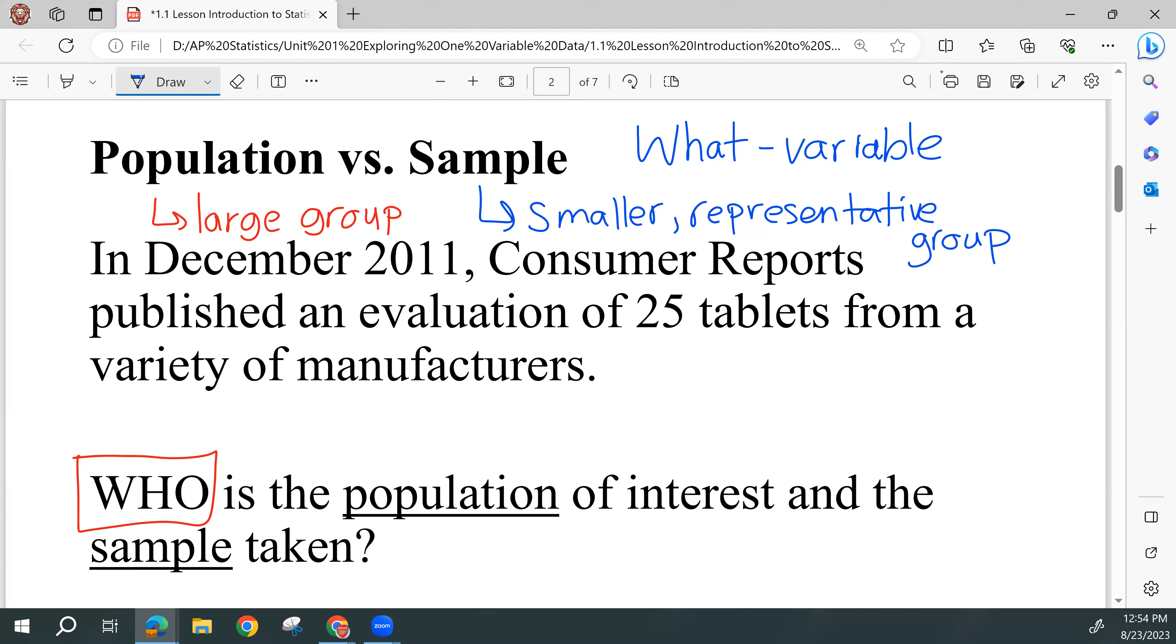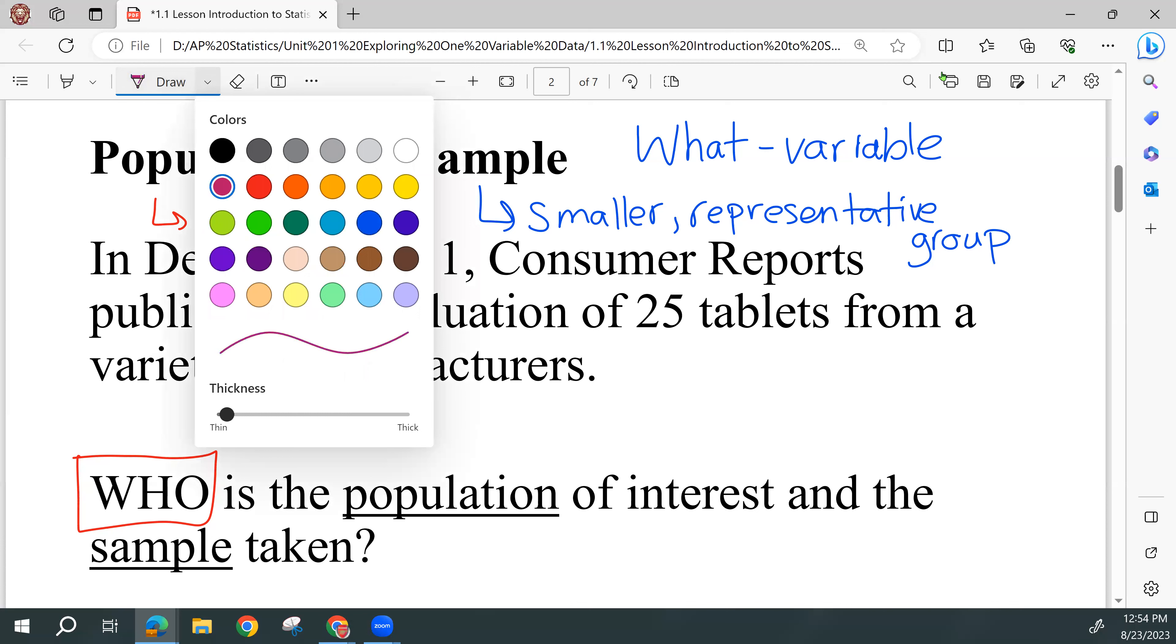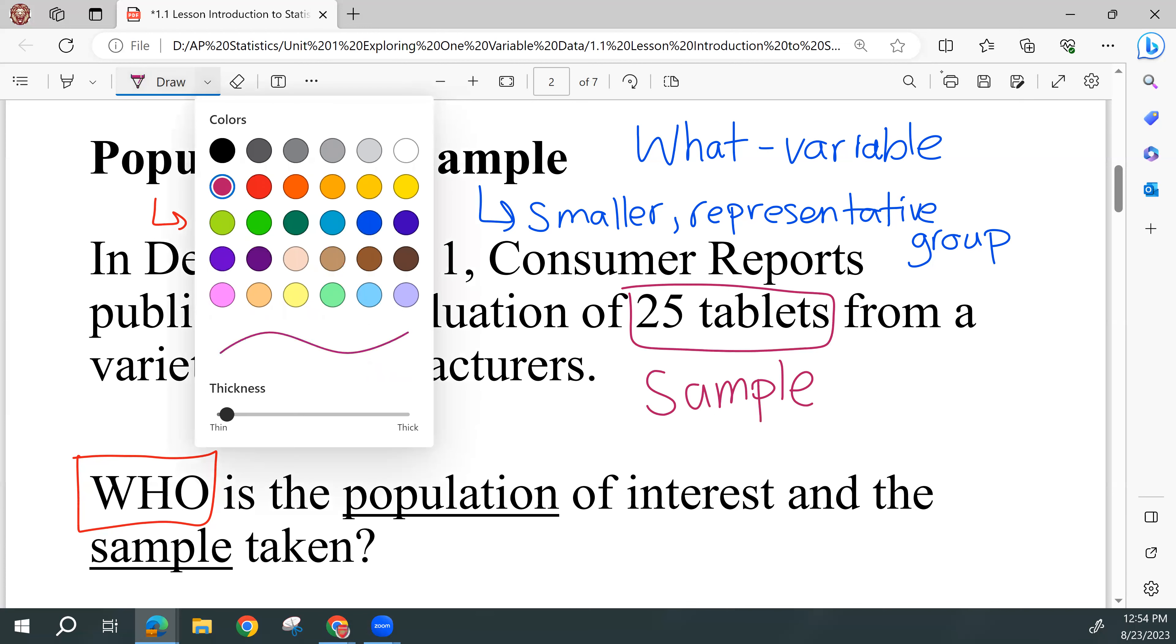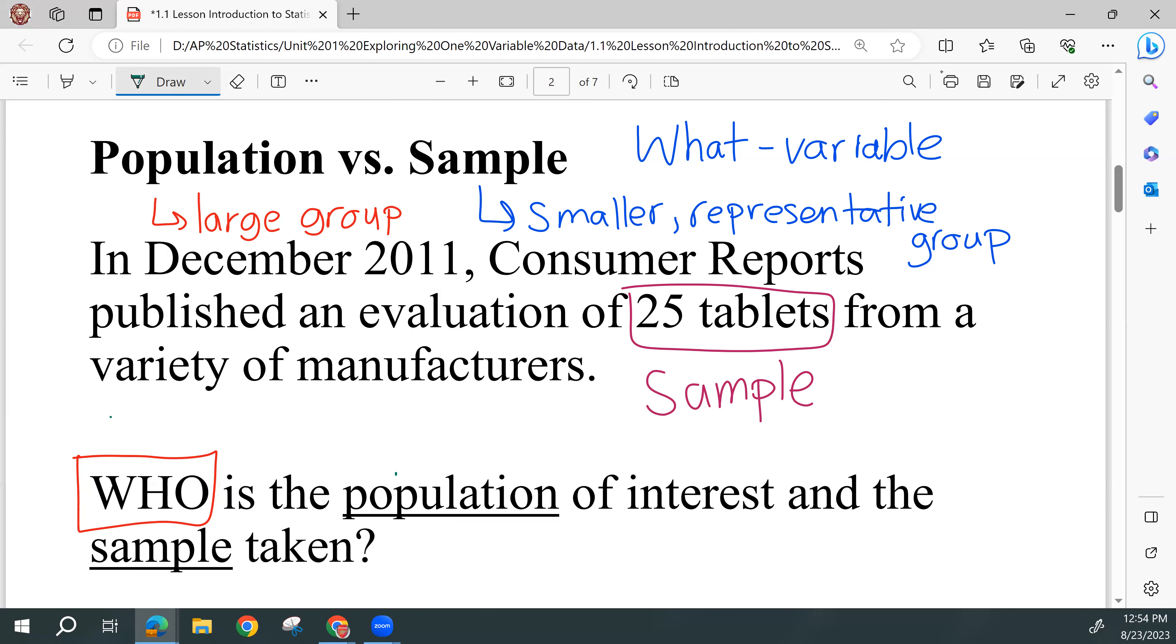So if we're looking at this example here from Consumer Reports, we have 25 tablets from a variety of manufacturers. That 25 tablets represents our sample. It's a small group. It's from a variety of manufacturers, so hopefully it's representative of all tablets, and all tablets would be what we are calling the population. So we're trying to find something about all tablets out on the market. We've sampled 25 from different manufacturers, and then we can process our information and hopefully draw some conclusions.